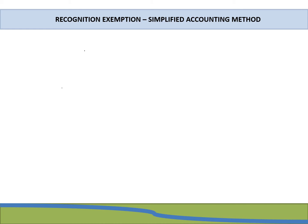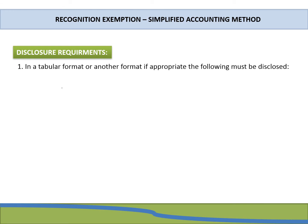When it comes to disclosure requirements, the standard requires the lessee to disclose in a tabular format the short-term lease expenses and the low-value asset lease expenses. These amounts are disclosed in the statement of profit and loss and will be the straight-lined amounts, unless another systematic basis was used.